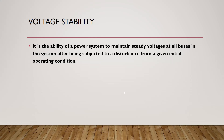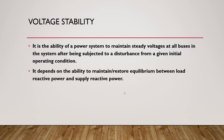Disturbances include short circuits on a transmission line, tripping of a transmission line, or any other disturbance. Voltage stability depends on the ability to maintain or restore equilibrium between the load reactive power and the supply reactive power. If we are able to maintain this balance, then we will be able to have a steady-state voltage.